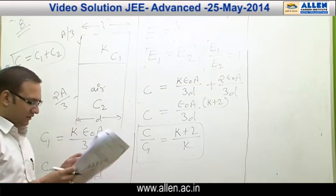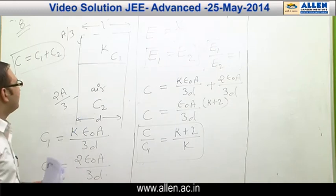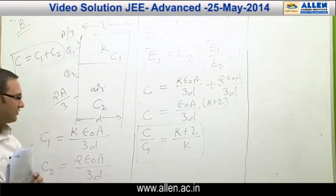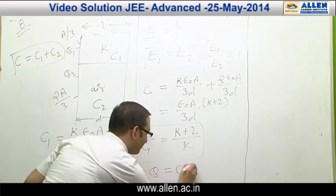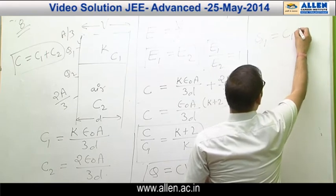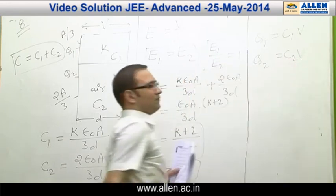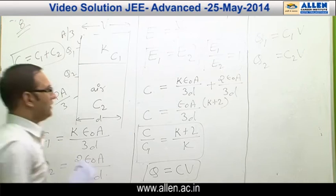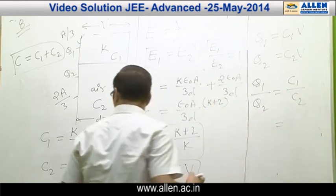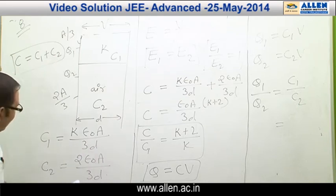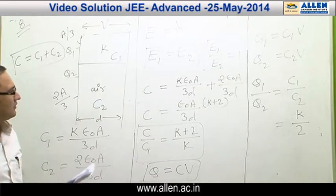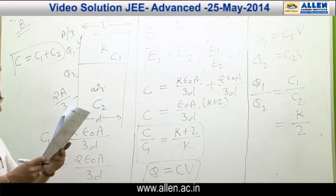Now we have to find option C — basically the ratio of Q1 and Q2, where Q1 is the charge on the dielectric part and Q2 is the charge on the air part. Since Q1/Q2 = C1/C2, dividing the expressions for C1 and C2 gives K/2. But in the given answer it is stated as 3/K, which is incorrect. So option C is incorrect and the correct answers are A and D.